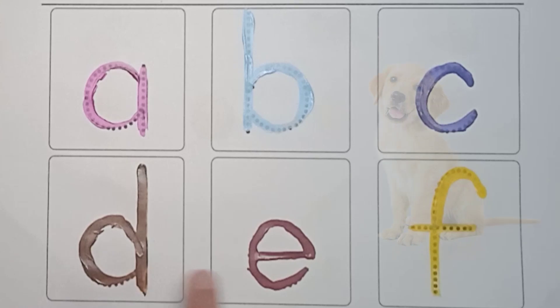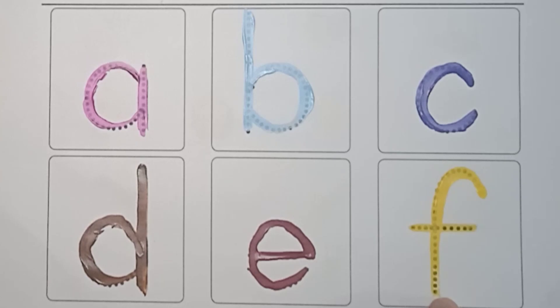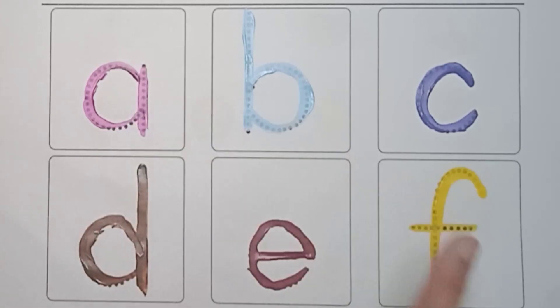D. D is for Dog. E. E is for Elephant. F. F is for Fish. So kids, yesterday we have learnt about A to F.